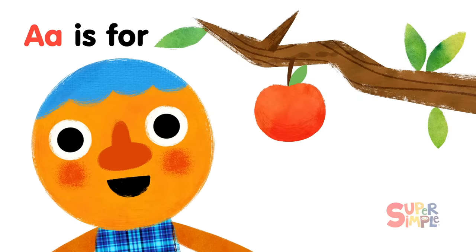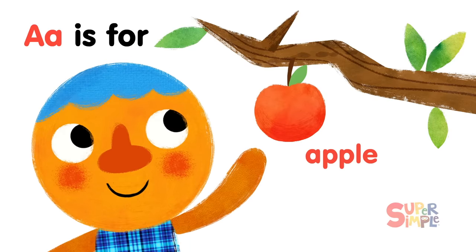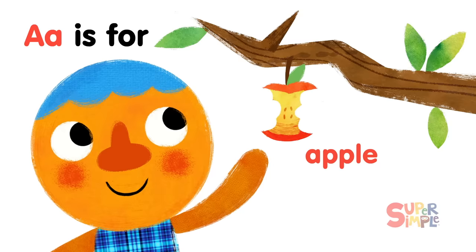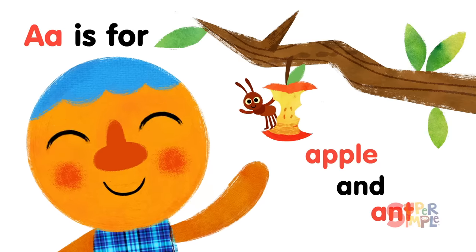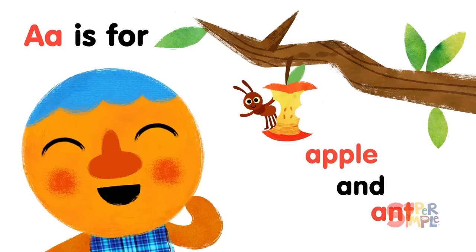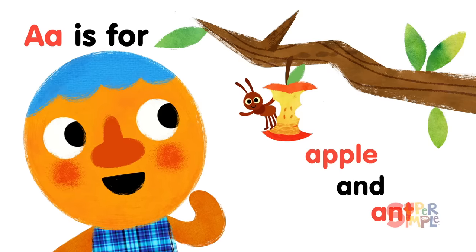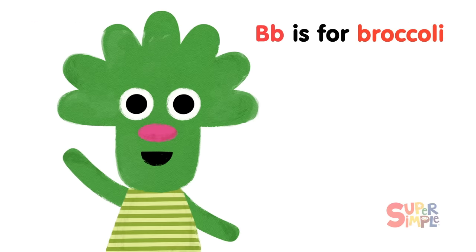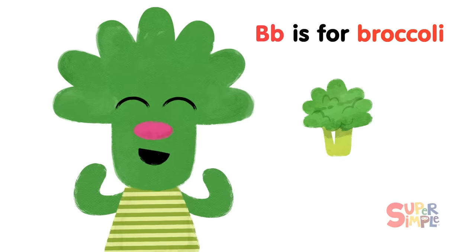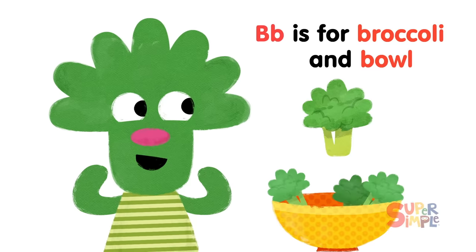A is for Apple and Ant. B is for Broccoli and Bull.